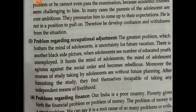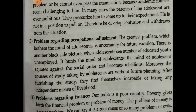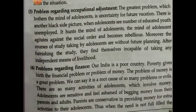Point number three: problem is regarding occupational adjustment. The greatest problem which bothers the mind of an adolescent is uncertainty about the future vocation. They worry about whether they will get a job or not - vocational adjustment becomes a problem. Many educated youth are unemployed, and when they see so many unemployed youth, they feel more insecurity. This agitates the mind of the adolescent, who becomes rebellious and aggressive if this problem is not solved.